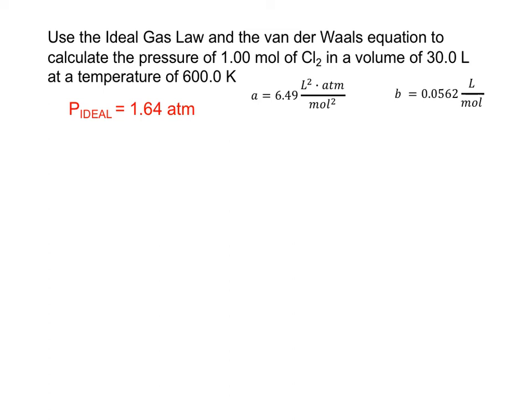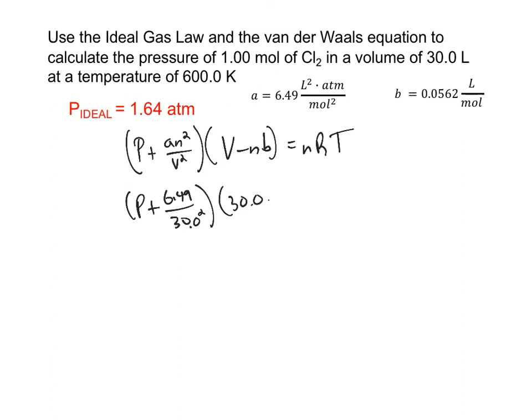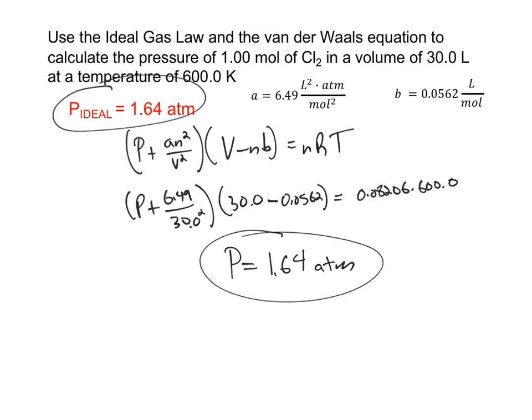Now if we do the same thing with the van der Waals equation, we're again solving for the pressure. Just to save us some time, I'm not going to work through the algebra here. You're welcome to do that if you want some practice. But when I solve for P, I get 1.64 atmospheres. So to the three significant figures that we have, under these somewhat different conditions, we can see that the ideal gas law and the van der Waals equation are giving us exactly the same answer.